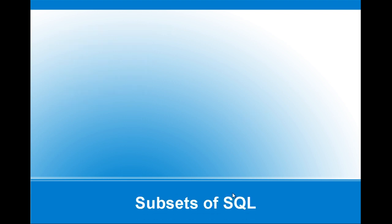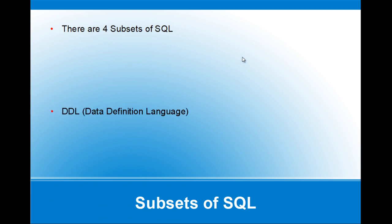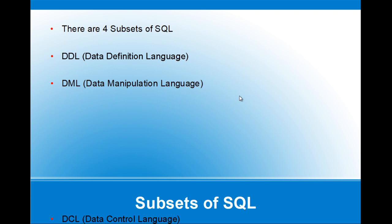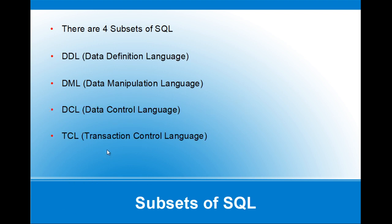What are the subsets of SQL? There are 4 subsets of SQL — whatever SQL we write falls into these 4 categories. The first one is Data Definition Language, the second is Data Manipulation Language, third is Data Control Language, and the fourth is Transaction Control Language. Let's see each and every command of these 4 subsets.